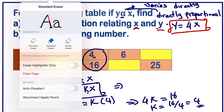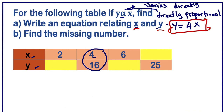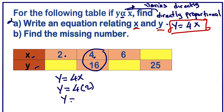Now let us complete the table. To complete the table we are going to use the formula y equals 4x, which is very important. That is why even if you are not asked to write the equation, always make sure you write it. So for x equals 2, we don't have y, so y equals 4 times 2, which gives y equals 8.